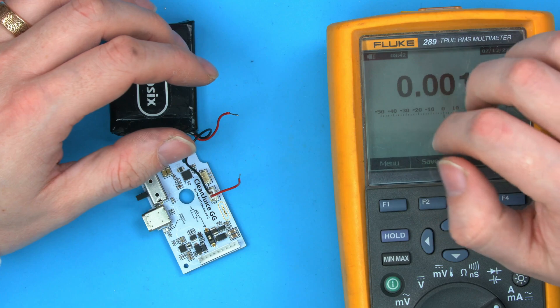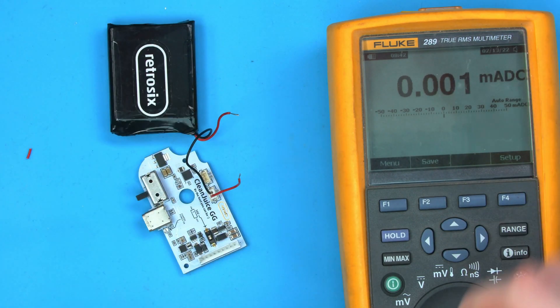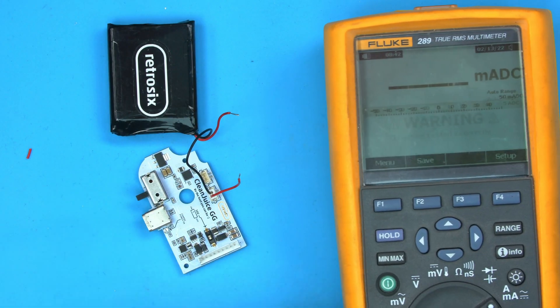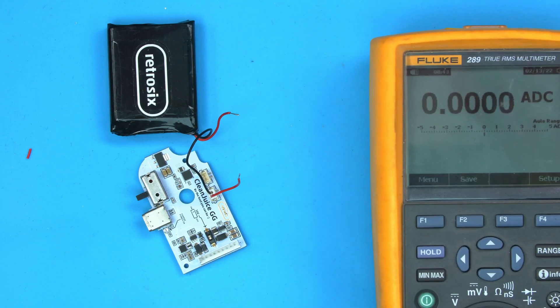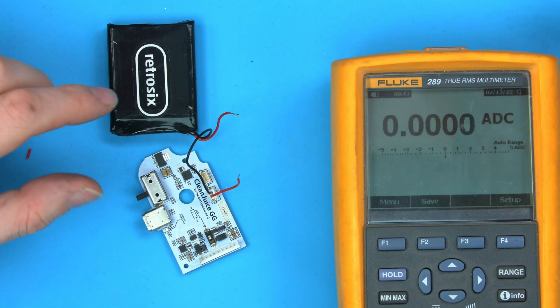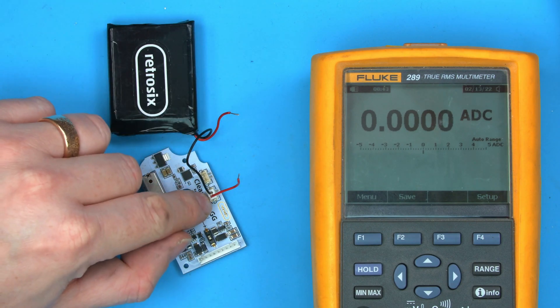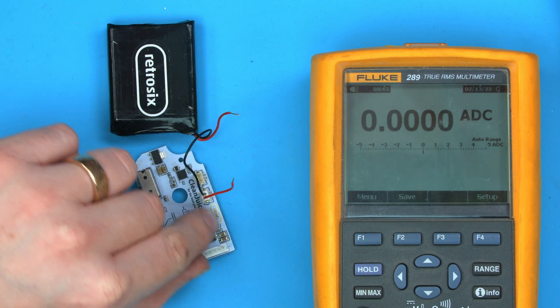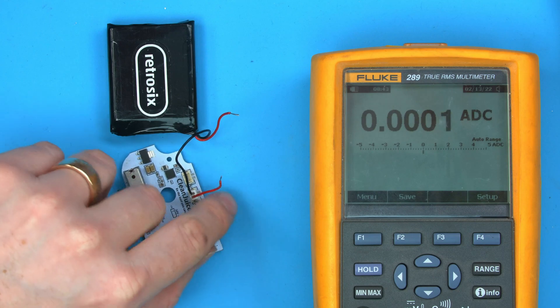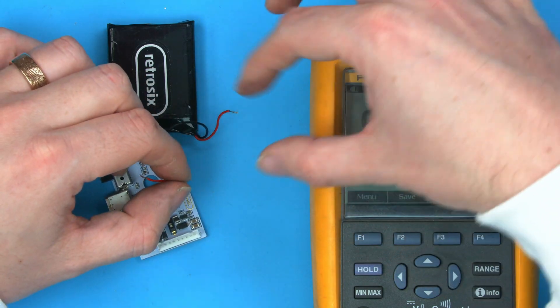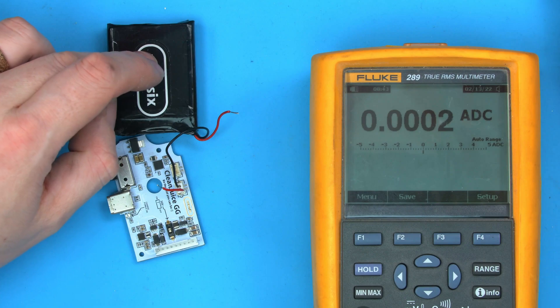You can see measuring current on a multimeter isn't the easiest thing to do. It normally involves having to cut some form of wire to do a measurement. When you use a bench power supply, it's as simple as just connecting the power. Instead of connecting a battery here, you would just solder wires to the positive and the ground, and then provide your bench power into the system and replace it from the battery.